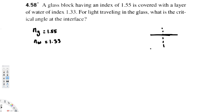The critical angle is the angle at which the transmitted ray is at 90 degrees to the normal. So if we have a ray traveling through the glass, the refracted ray bends to 90 degrees at the interface — that angle in the glass is the critical angle, theta c.